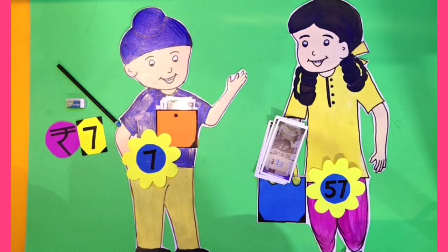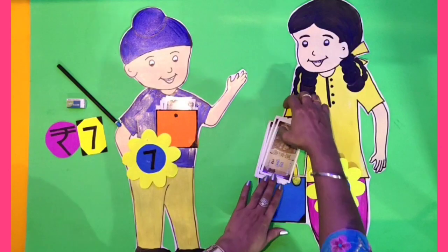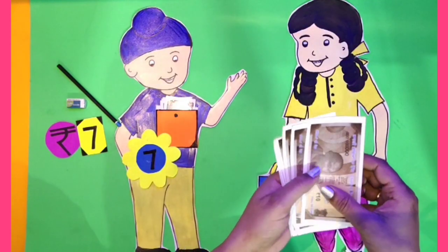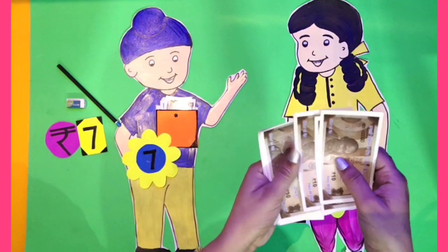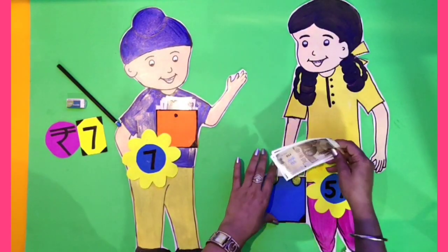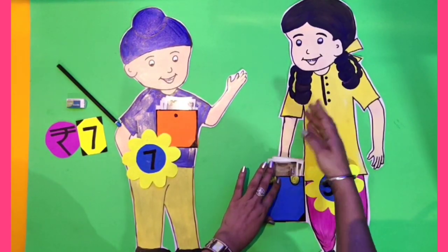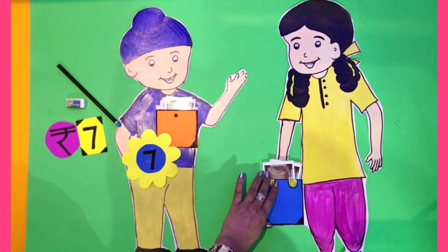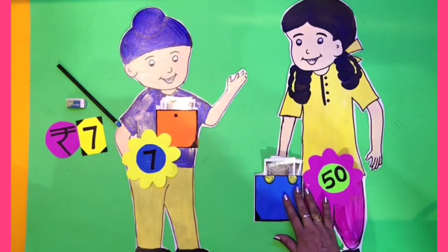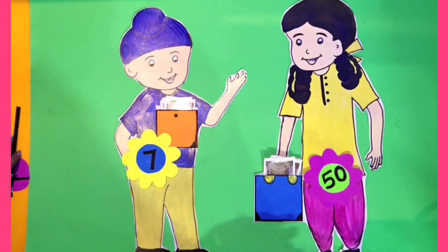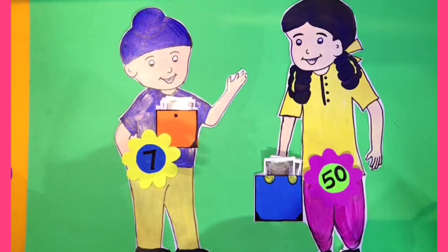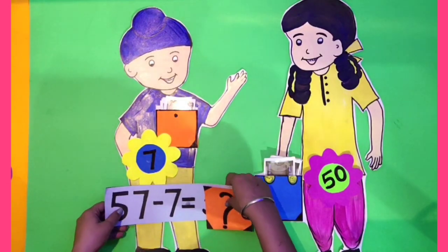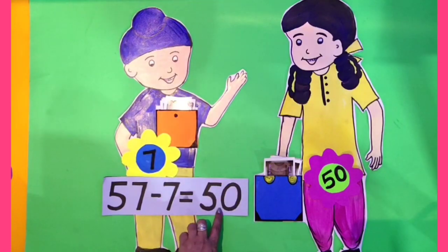Now let's see with how many rupees Arpan is left. Let's count 10, 20, 30, 40, 50. So dear students, Arpan is left with 50 rupees. That means 57 minus 7 is equal to 50.